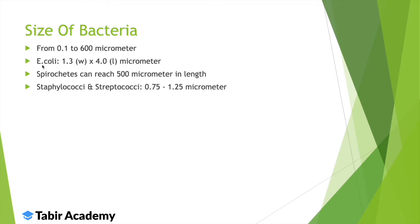Looking at some examples: E. coli has a width and length such that it measures 1.3 micrometers by 4 micrometers. The length of spirochetes is generally 500 micrometers. Staphylo- and streptococci are cocci, meaning they are basically round, with a diameter of 0.75 to 1.25 micrometers.